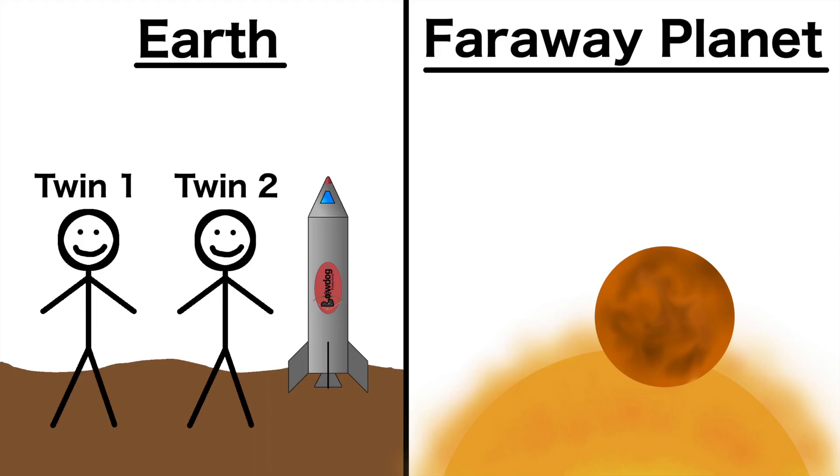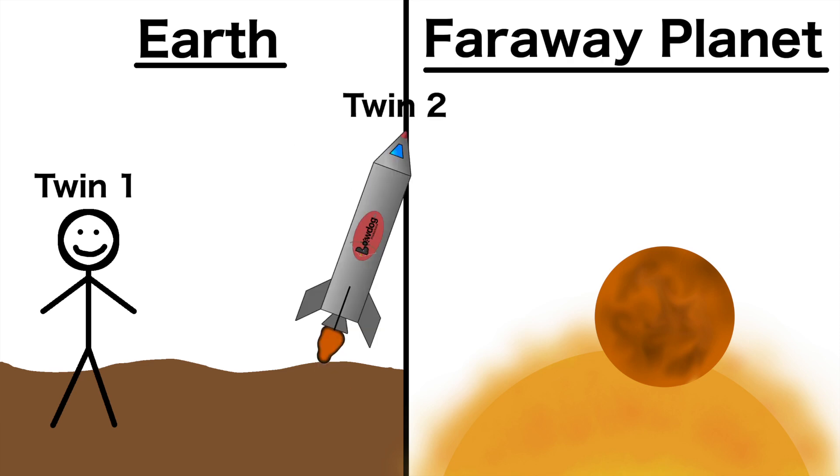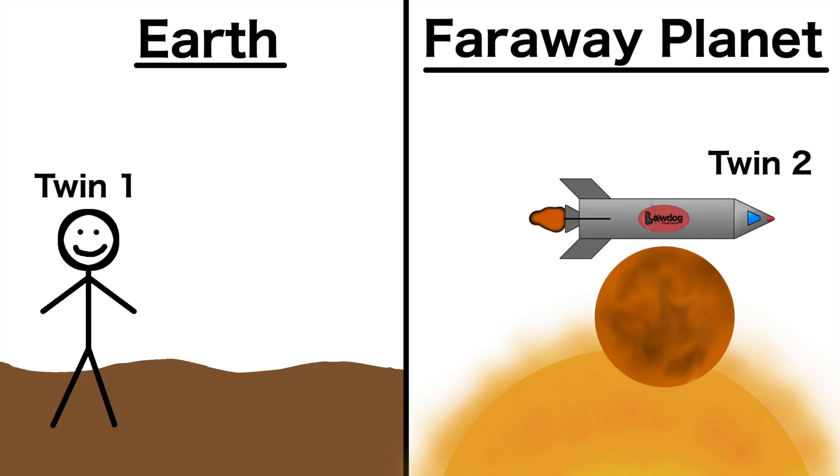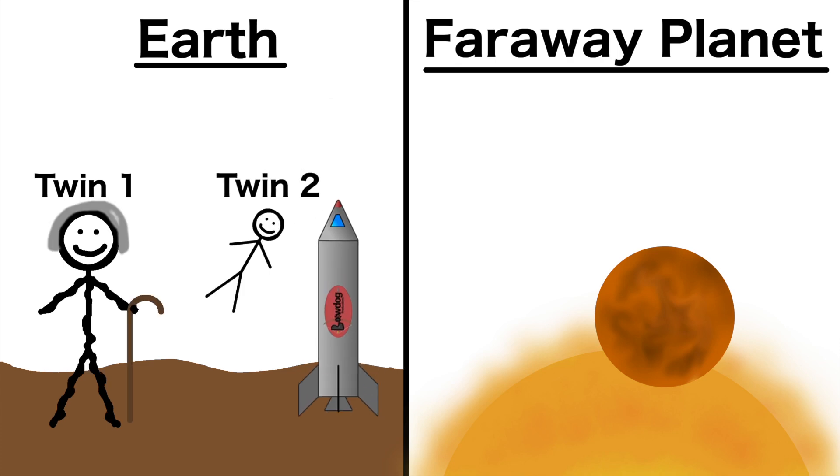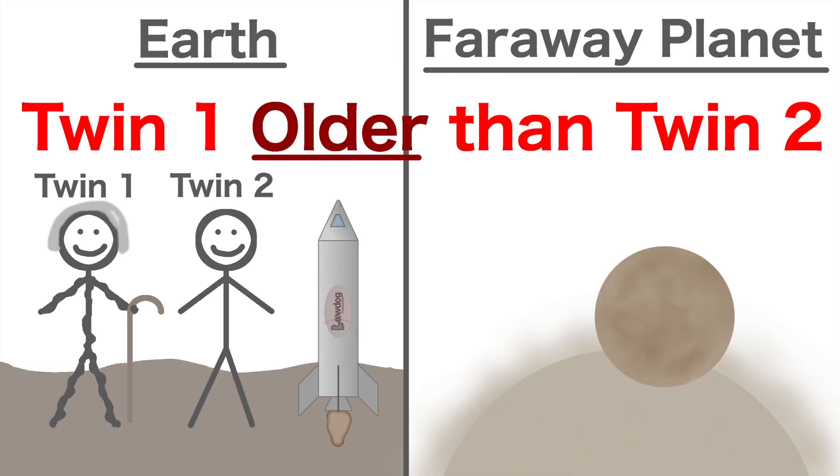In fact, Einstein thought about this scenario in a thought experiment between two twins, one on Earth and one traveling in a rocket, and concluded that the twin on Earth would indeed age faster, causing a noticeable difference in age when they meet back on Earth. Relativity is talking about the true passage of time, where clocks actually begin to tick at different rates because the flow of time itself is varying.